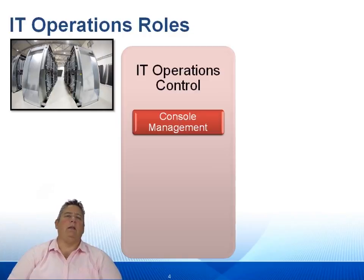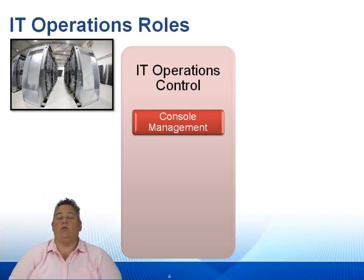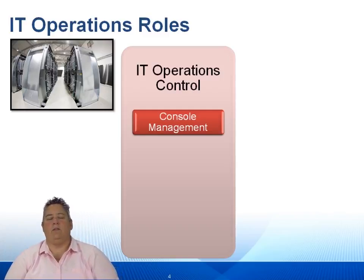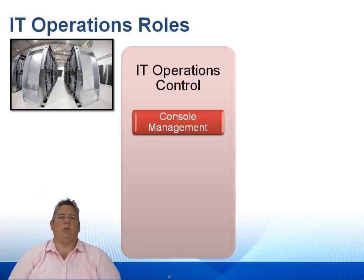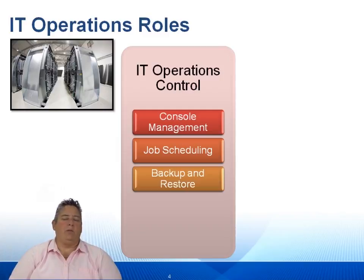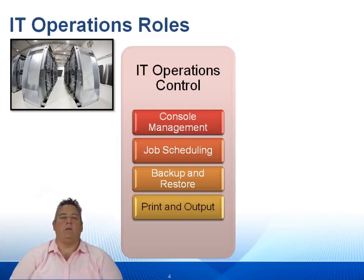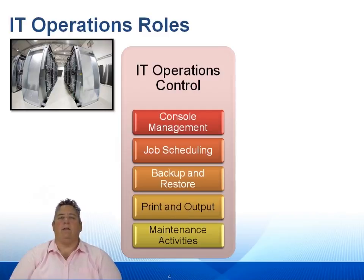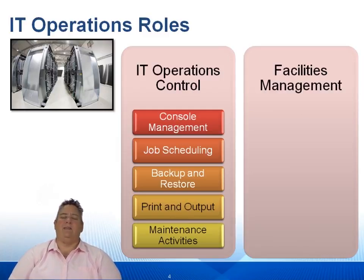There are multiple roles in IT operations — two sub-processes. We have IT operations control, and then we also have facilities management. IT operations control has numerous activities: console management, where we're watching the enterprise system monitoring; watching the performance of individual CIs; job scheduling; backing up and restoring activities; performing print and output — electronic as well as physical print output — and some maintenance activities.